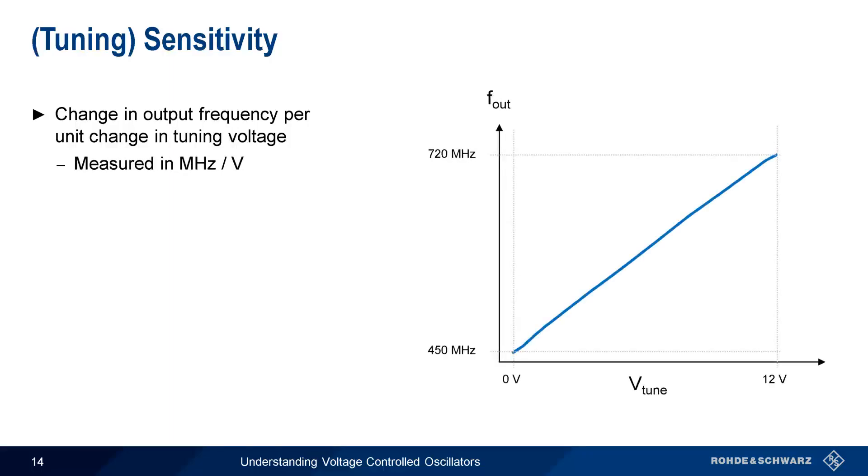Sensitivity is therefore measured in MHz per volt. Let's go back to our frequency versus tune voltage measurement from earlier. We can use the max and min frequencies to calculate the tuning sensitivity across the tune voltage range. Here, 22.5 MHz per volt.